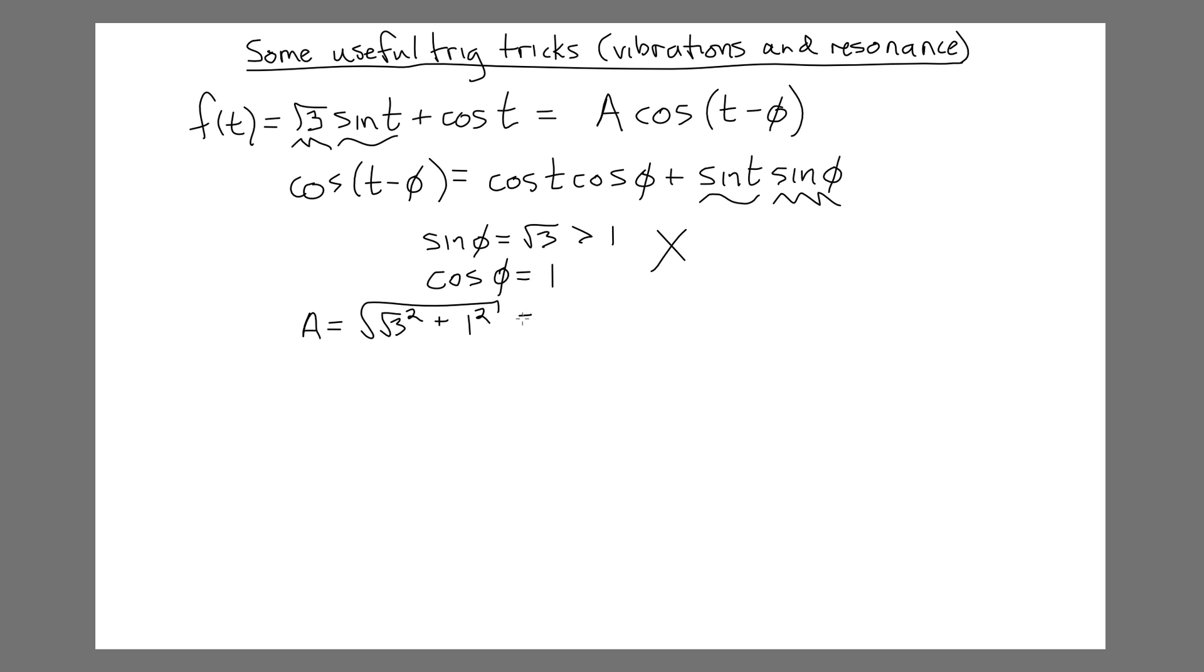And what we find when we calculate this number is we get 3, square root 3 squared is 3, plus 1 is 4, 4 square rooted is 2. So our amplitude is 2. So now we can divide through, or let's say factor out, that 2,